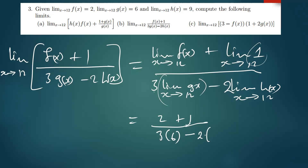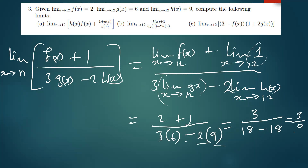Substituting values: the numerator is 2 plus 1 equals 3. The denominator is 3 times 6 equals 18, minus 2 times 9 which also equals 18, giving 18 minus 18 equals 0. So we have 3 over 0, and any number divided by zero is undefined. This means the limit does not exist.